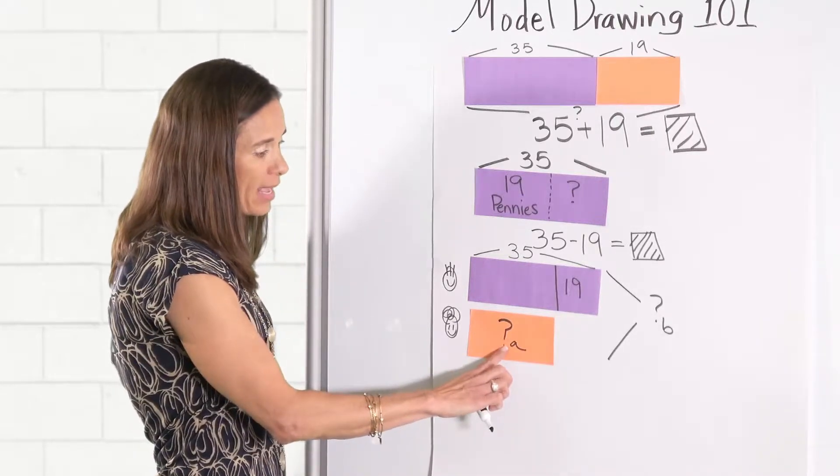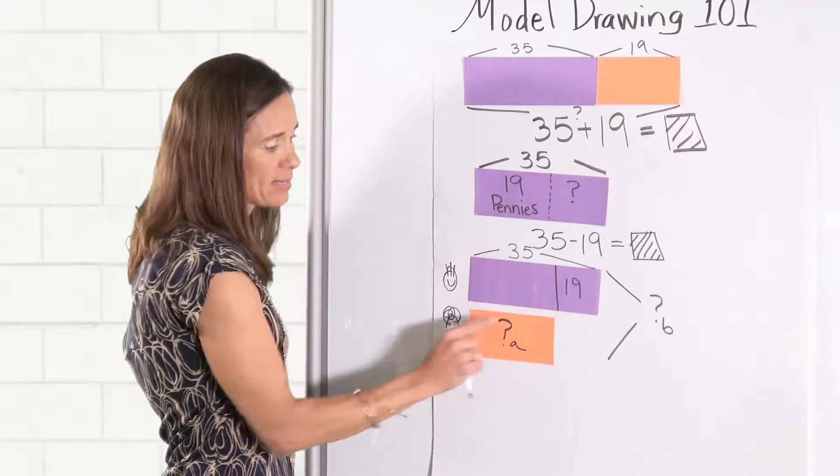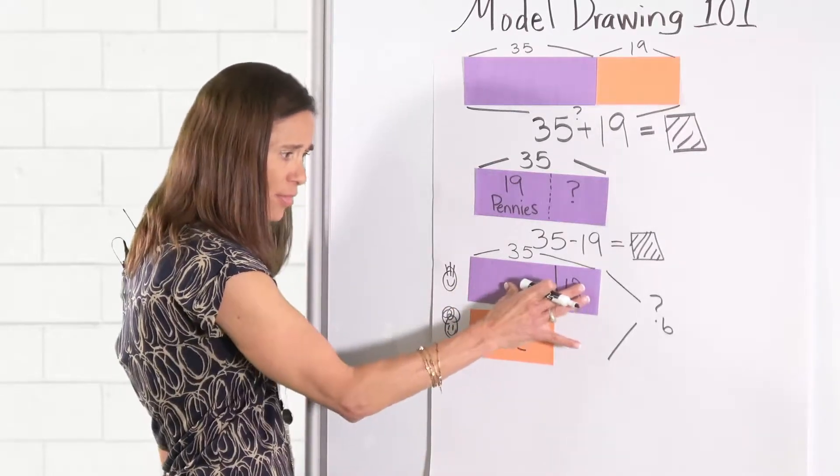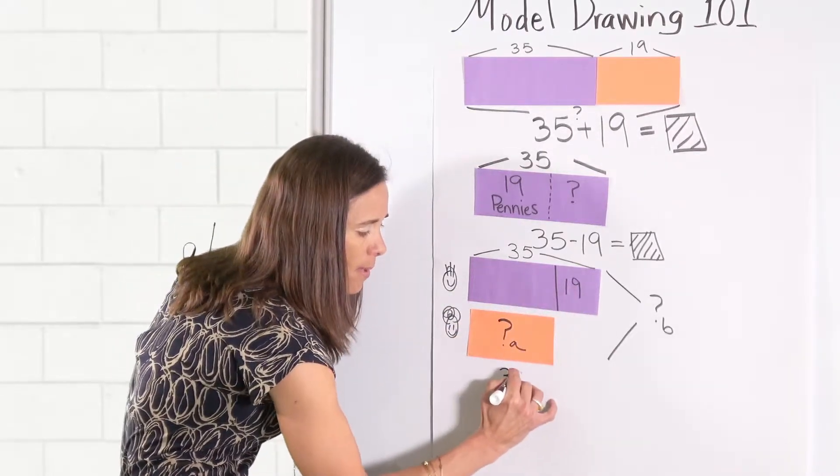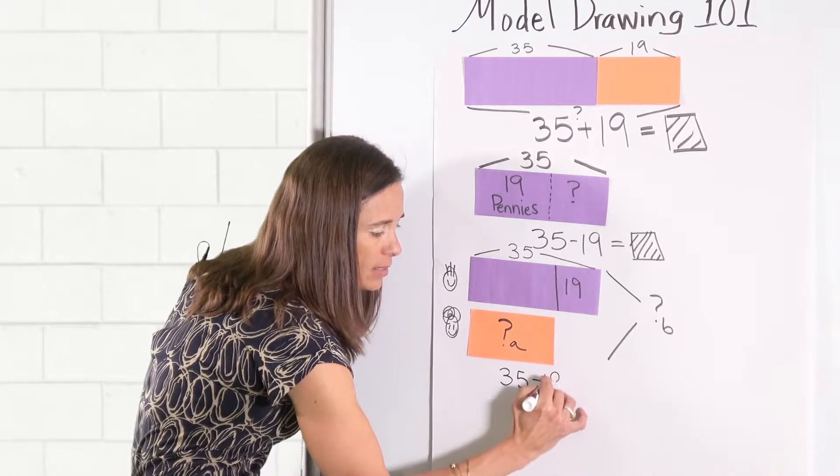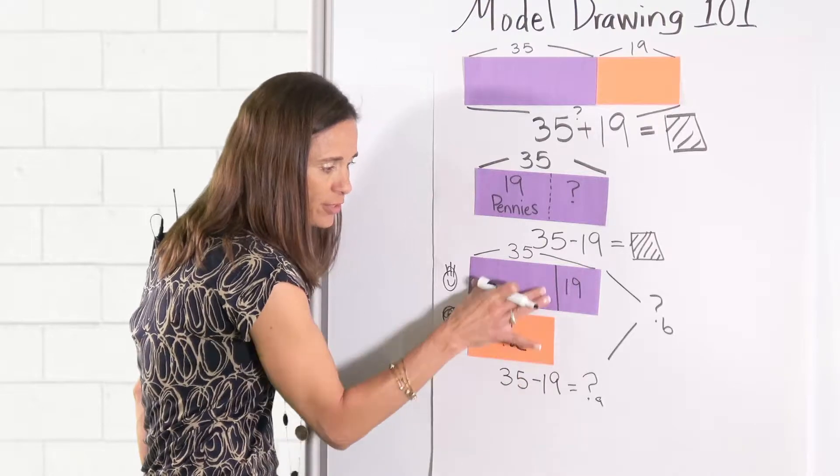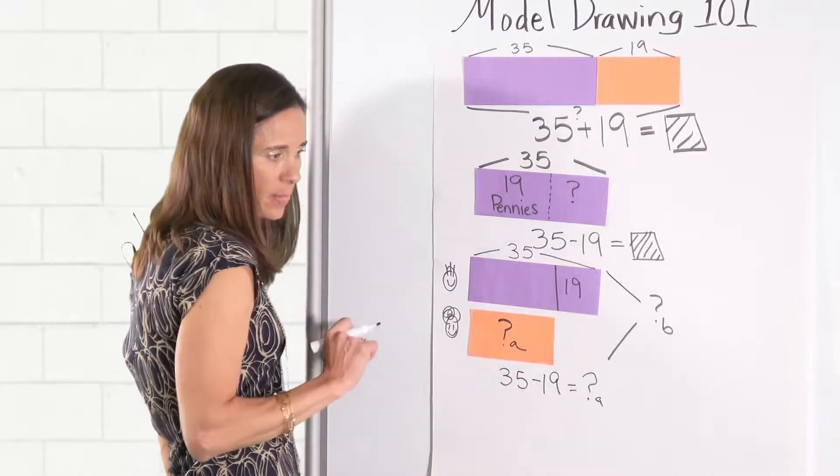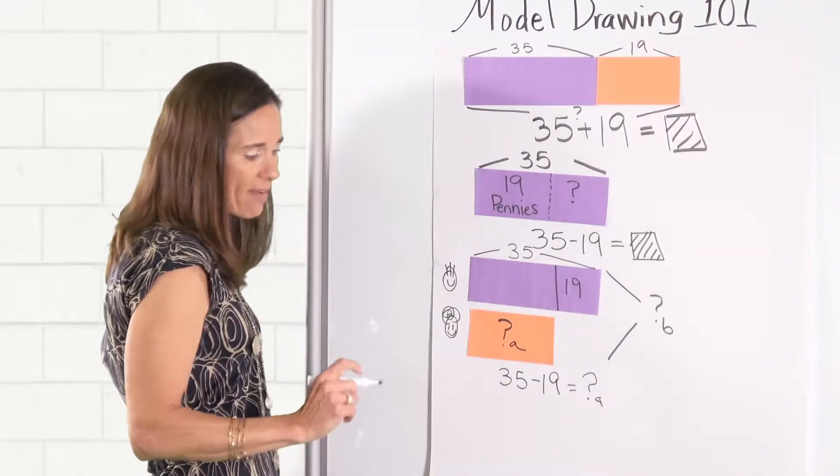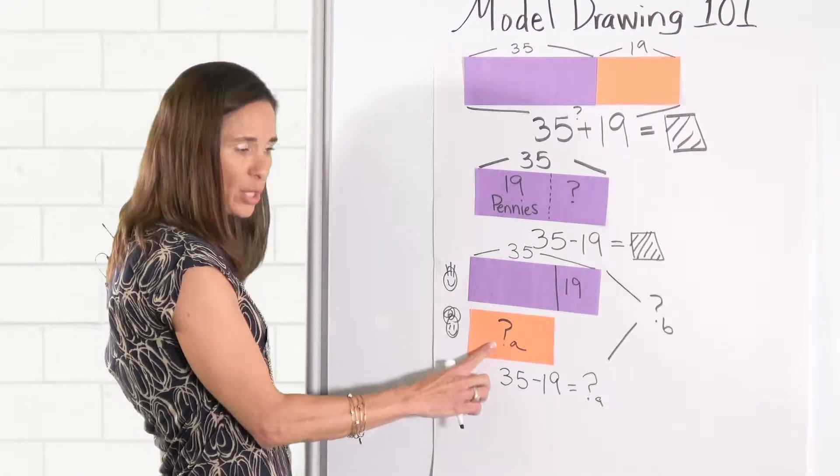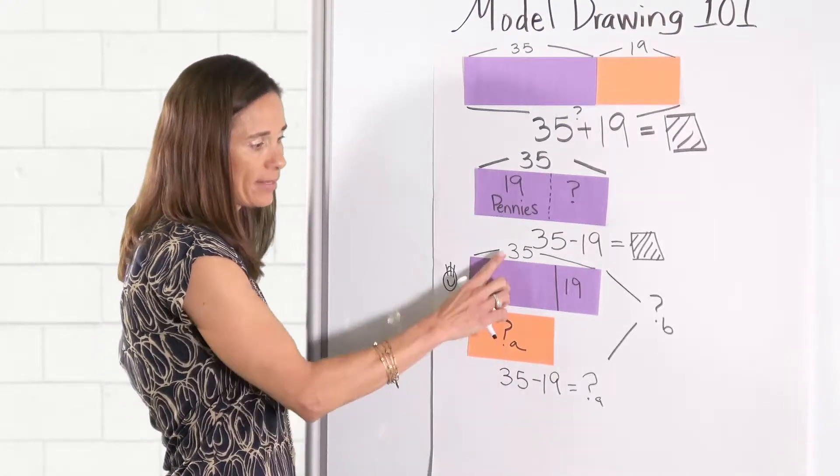So in question A, in order to figure out Curly's amount, we would take that 35 minus my 19 to give me what this missing part is, which we've shown is the same. To figure out how many they have all together, we would have to use that amount and add it to the 35.